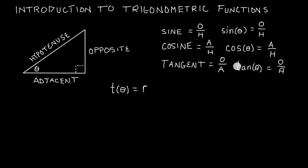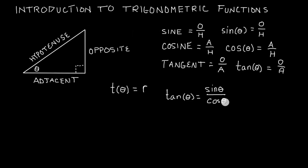Tangent can also be thought of in a different way. The tangent of some angle theta is also equal to the sine of that angle divided by the cosine of that angle. Oftentimes you'll see sine of theta and cosine of theta written without the parentheses — you can write it either way you're comfortable with. When you first get started, it's often easier to put parentheses around the argument so you know exactly what part is the argument. As you get more used to using sine and cosine, you'll often switch to simply putting the angle right after the sine and cosine term.